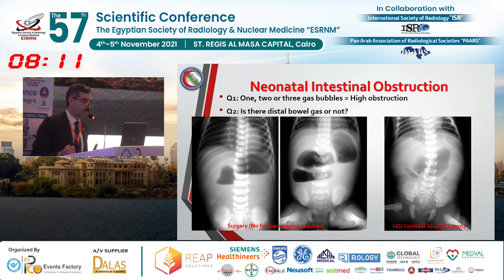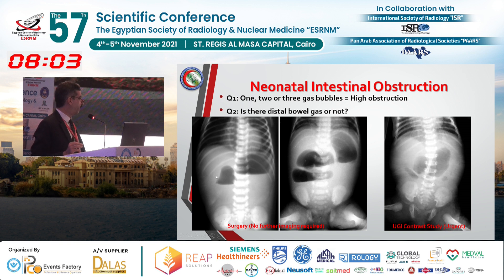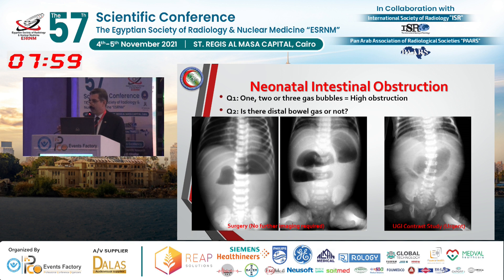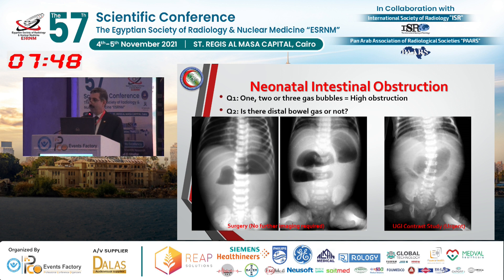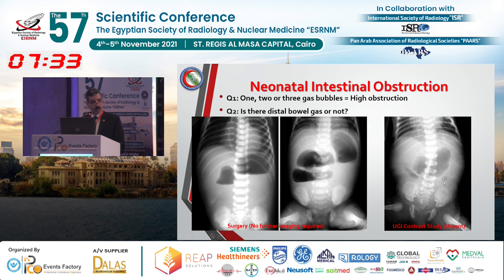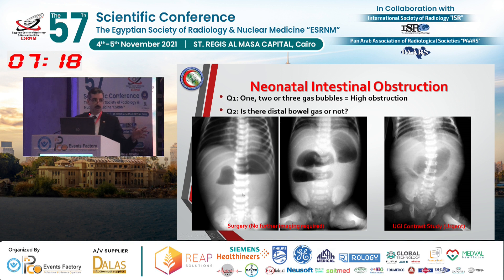How many gas bubbles do I have — one, two, or three? If I have the double bubble sign, which we are all familiar with, this is high obstruction. If I have three or four bubbles, this is proximal jejunal obstruction. Importantly, look at the distal bowel: if there is no air in the distal bowel, this baby will immediately go to surgery — no need for contrast study or further investigation. But if you have two or three bubbles and also small scattered distal bowel gas bubbles, you need to proceed differently.